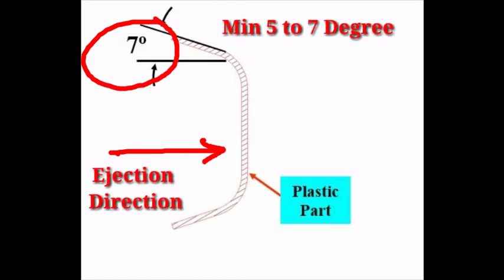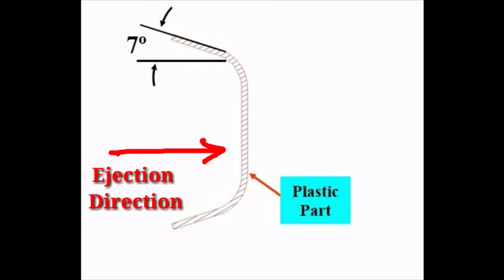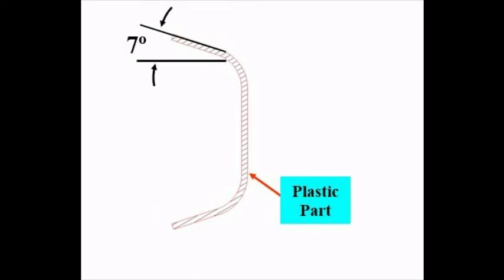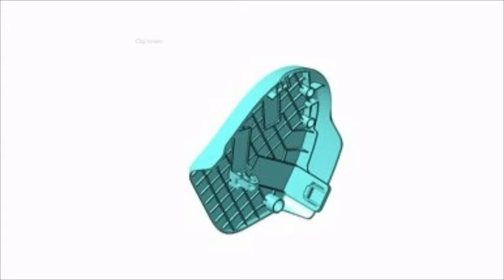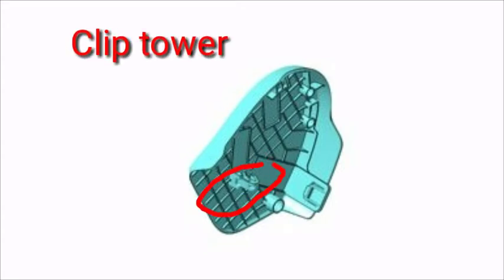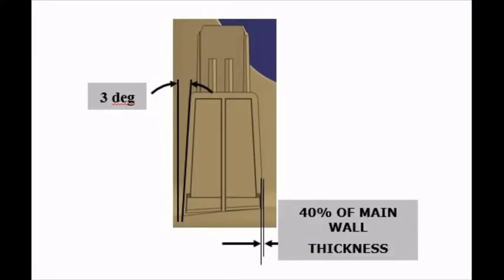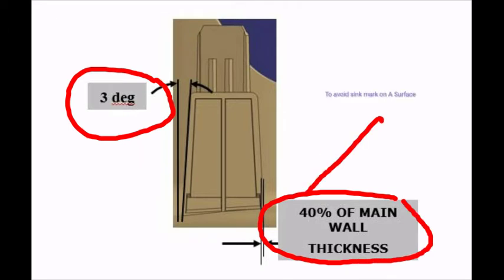Mostly, a minimum 5 to 7 degrees draft is provided to the A-surface, which is easy from the ejection point of view. If any grain structure is considered, the draft angle will change or be updated according to the surface area of the graining structure and its depth. The next guideline is about the design of a clip tower or dog house. In seating system design, we should maintain a minimum 3 degrees of draft, and 40% of the maintained wall thickness at the bottom — as highlighted in the image.